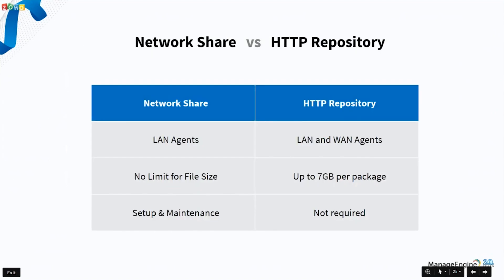There are two types of repositories. A network share allows computers with directory access to get software — ideal for LAN agents, with no size limit. The HTTP repository supports both LAN and WAN agents. When computers are outside the network and can't access a network share, you use HTTP repository to fetch and deploy software. The HTTP repository has a 7 GB upload limit, but requires no setup or maintenance — it's a default directory created automatically by Desktop Central.